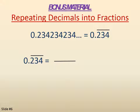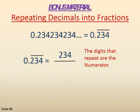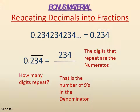Since we're making it a fraction, we draw the fraction bar. The digits that repeat become the numerator, so 234 goes on top. We count the number of digits, which is 3 — that tells us the number of nines that go in the denominator. Since there are three digits, we put three nines in the denominator. So 0.234 repeating becomes 234 over 999.